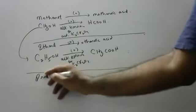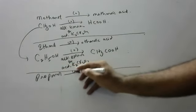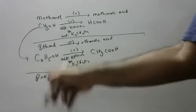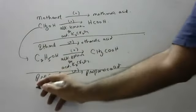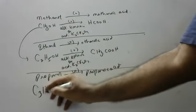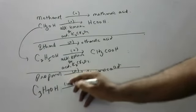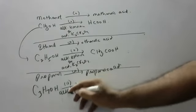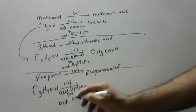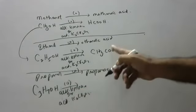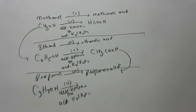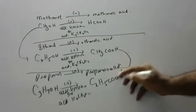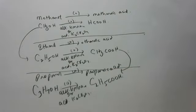One more — propanol. Propanol on oxidation gives propanoic acid. What is the formula of propanol? C3H7OH. C3H7OH on oxidation, in the presence — if you don't write what is under and above the arrow brackets, your marks will not be added. You should write acidified potassium dichromate. C3H7OH gives propanoic acid. The formula of propanoic acid is C2H5COOH.